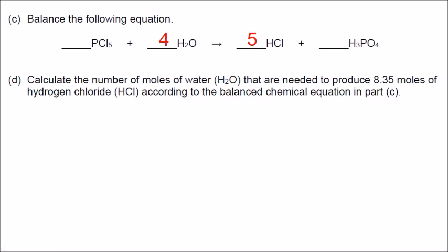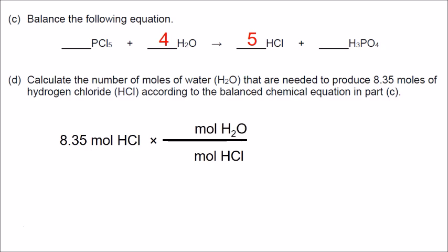Part D: calculate the number of moles of water needed to produce 8.35 moles of HCl according to the balanced equation in Part C. We set up the conversion factor with moles of HCl on the bottom and moles of water on the top. The coefficient for water is 4 and for HCl is 5. So 8.35 times 4 divided by 5 gives us 6.68 moles of water.